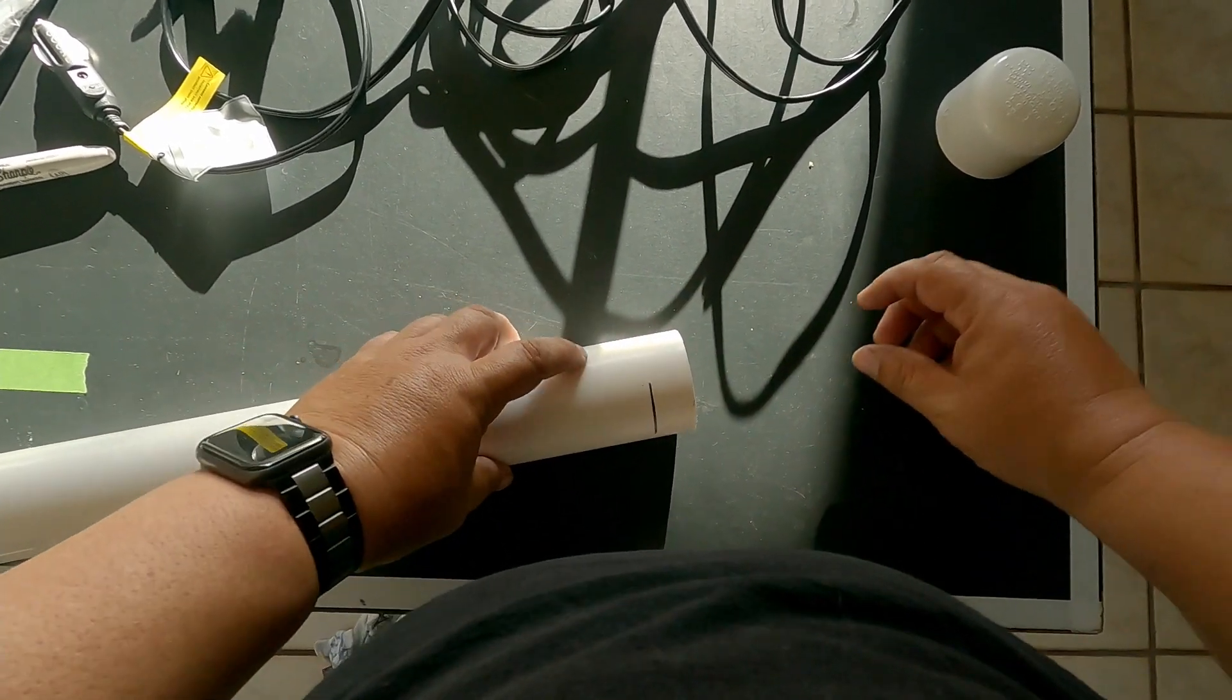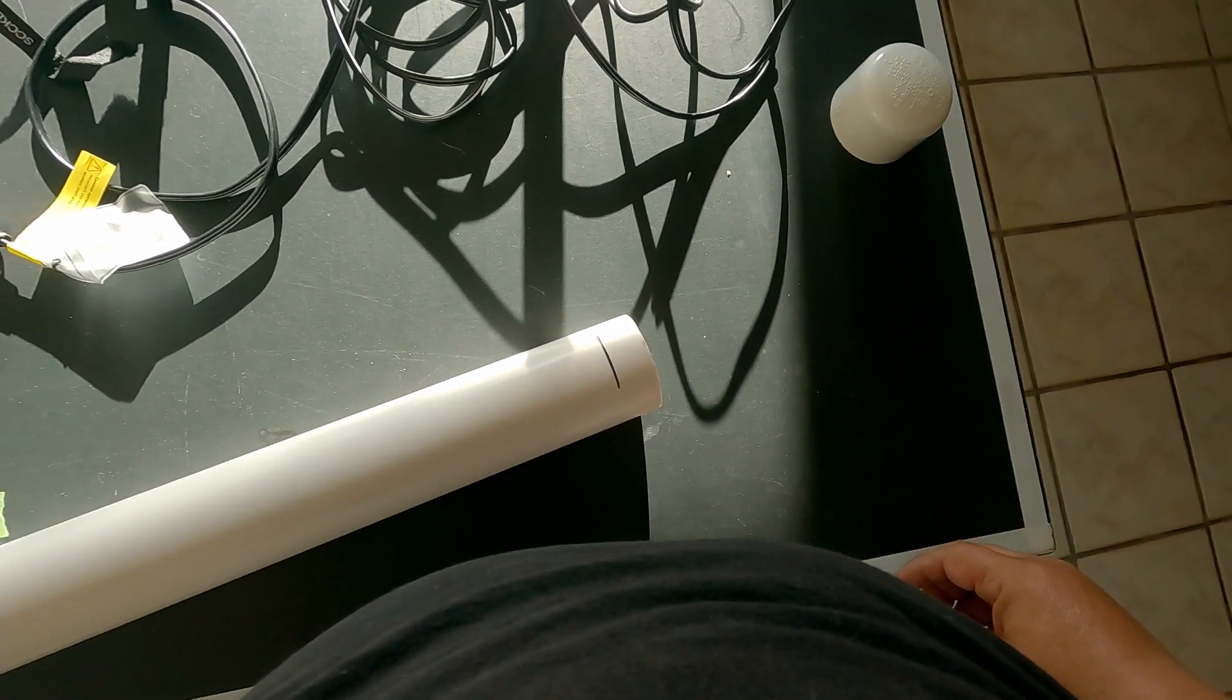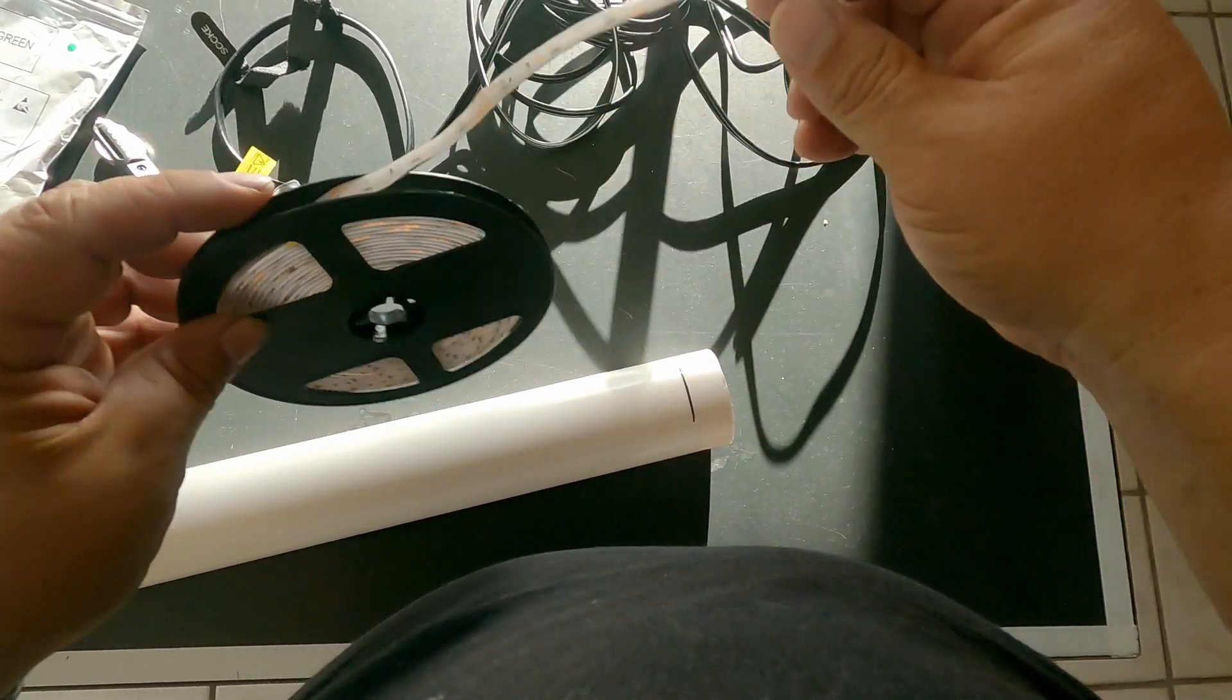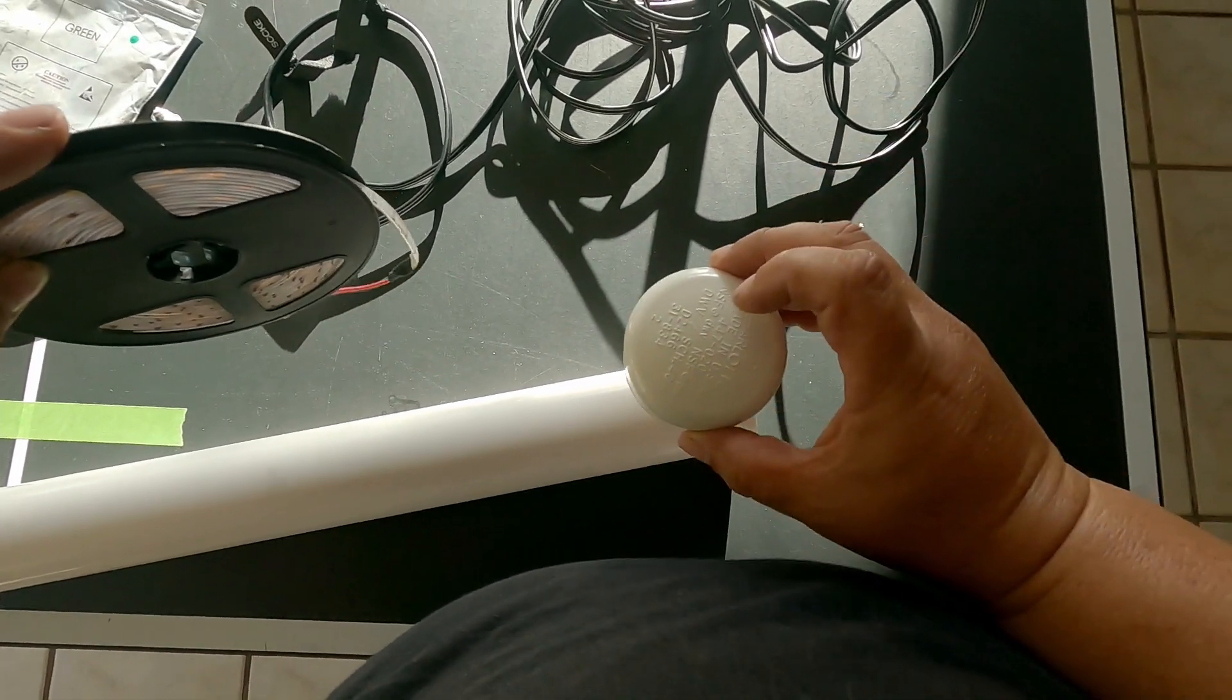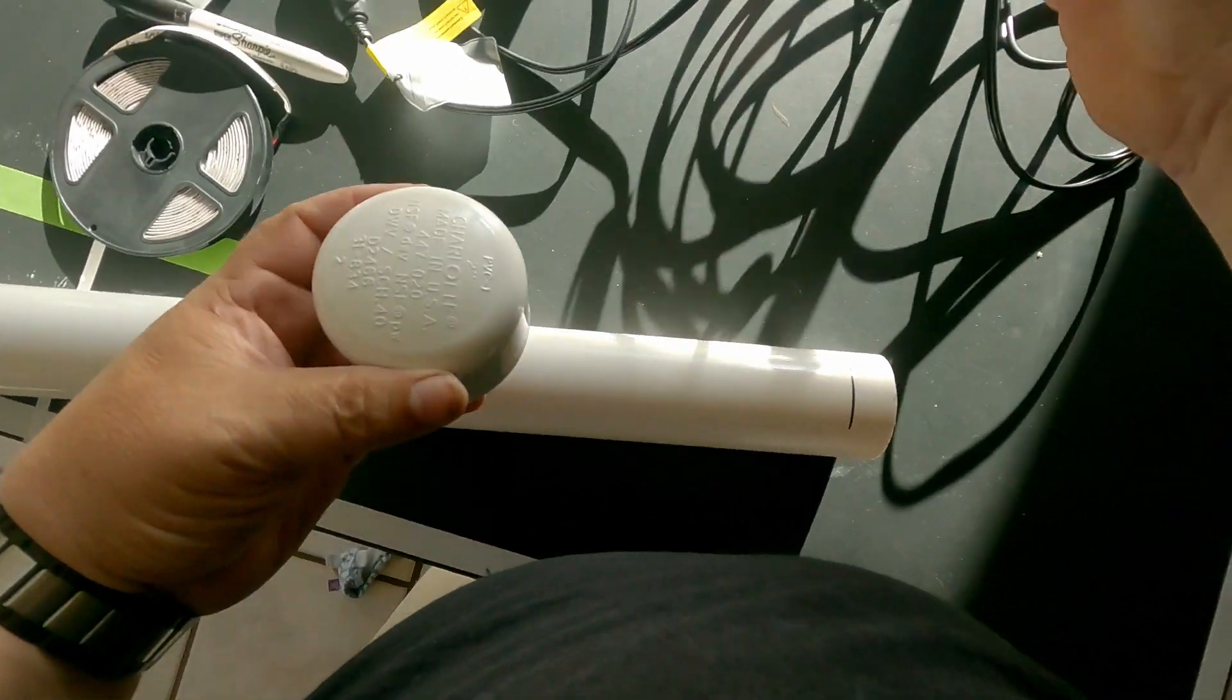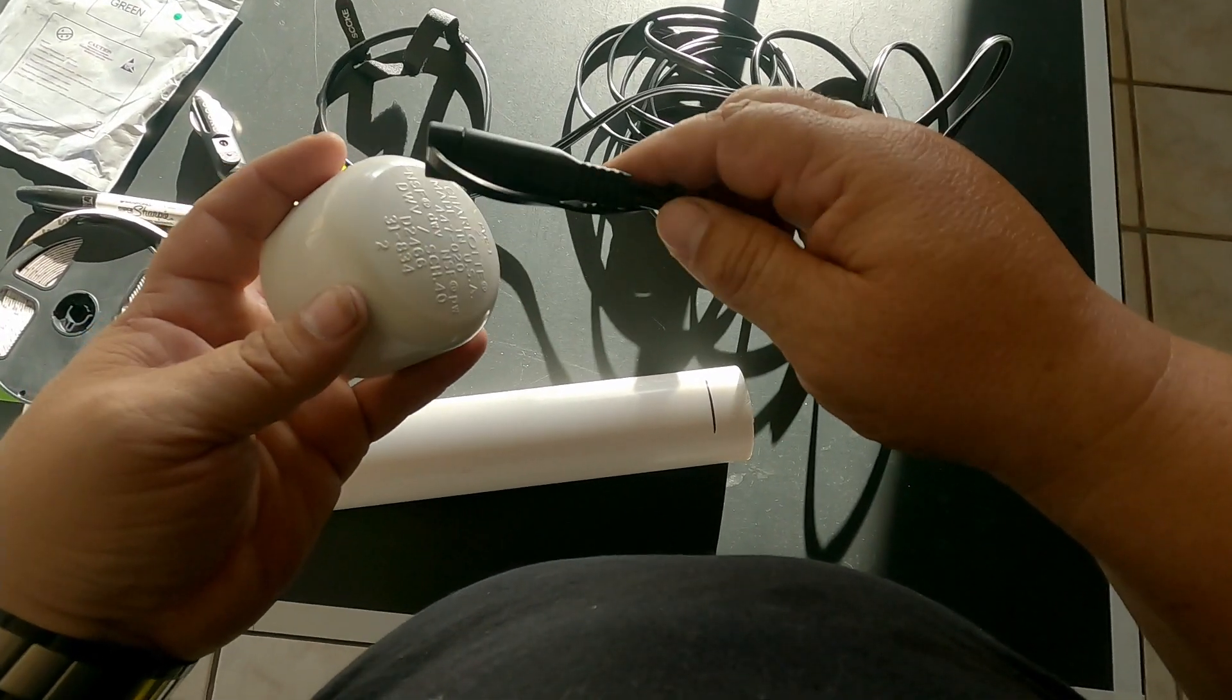We're going to drill a hole in here to run our lights inside, and then we're going to drill a hole in the center of the cap to run this wire in there.